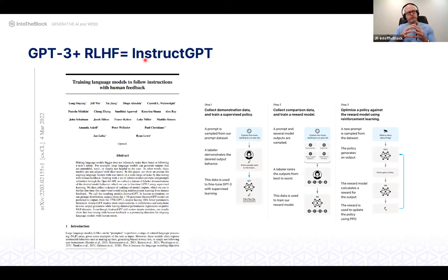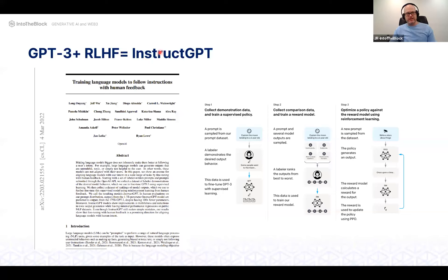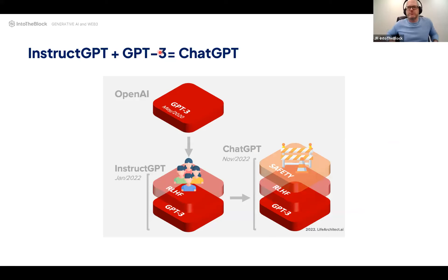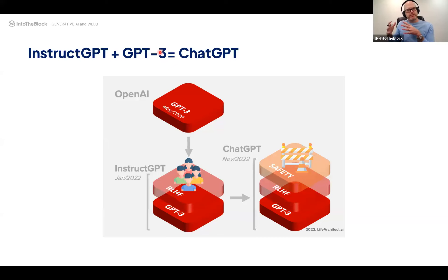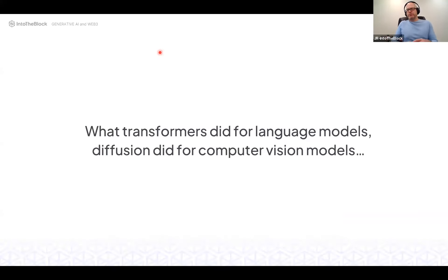The combination of GPT-3 plus RLHF created a model in 2022 called InstructGPT, which went completely under the radar. It was good not just at processing language, but at following instructions and understanding human intent. InstructGPT plus GPT-3 is essentially what we know as GPT-3.5. ChatGPT was created as a demo for GPT-3.5 capabilities, previewing what would come in GPT-4, and it became a massive standalone success.